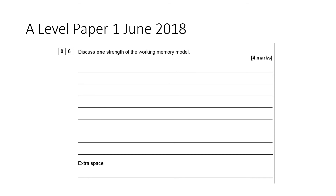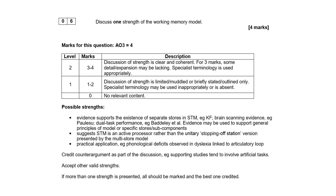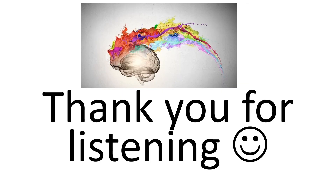Also from A-level Paper 1, June 2018: 'Discuss one strength of the working memory model' for four marks. Write a clear PEEL paragraph focusing on one strength with sufficient detail. The mark scheme notes that if more than one strength is presented, all are marked and the best credited - but don't waste time on multiple points. Clearly state and develop one strength fully to secure maximum marks. Best of luck with the rest of your revision.